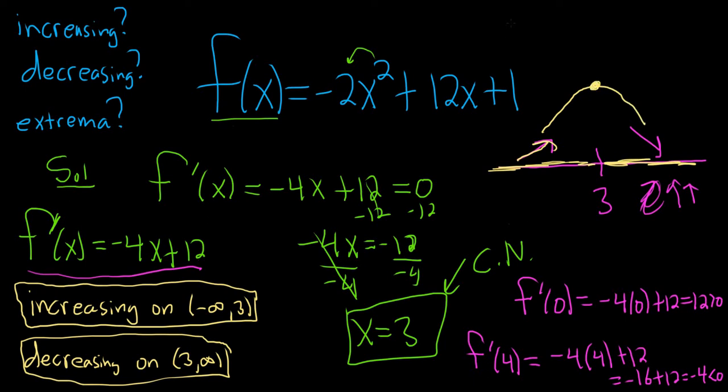So we have a relative maximum. So rel max at x equals 3. So whenever this behavior happens at a critical number, you get a maximum. By the way, this is called the first derivative test. It actually has a name. You know, me drawing this little picture and saying we have a maximum. It's really intuitive, but people have given it a name. They call it the first derivative test. So we have a maximum at 3.